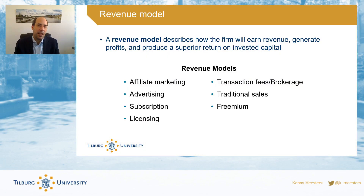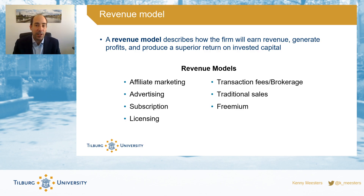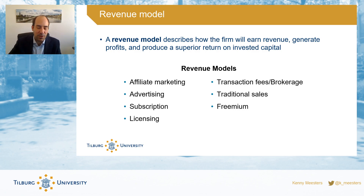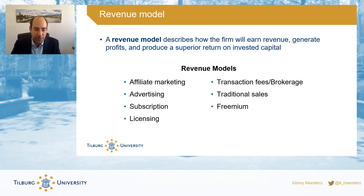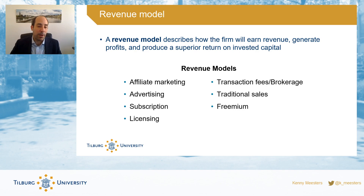Looking at specific revenue models — approaches that will generate income — there are different ways you can do that with information systems. A revenue model essentially tells you how you would generate income from an investment you've made previously. You could get a return on investment, interest on a loan, or income based on products you sell — transforming resources into products and getting paid when people buy them. In information systems today, there are specific models that are a bit different from purely labor-based or capital-based ones, and those are essentially based on information.